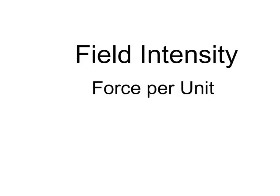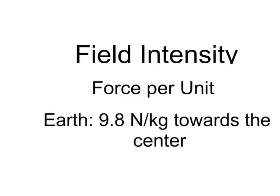So field intensity really means force per unit, where force is a vector quantity. For example, the Earth has a gravitational field of 9.8 newtons for every kilogram towards the center, and that's when you're on the surface of the Earth.